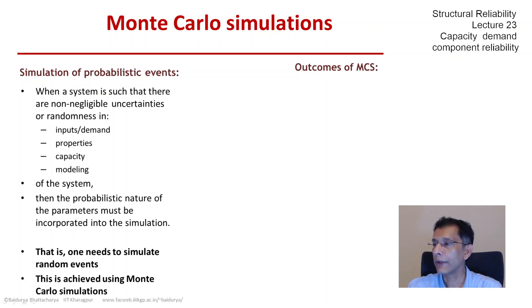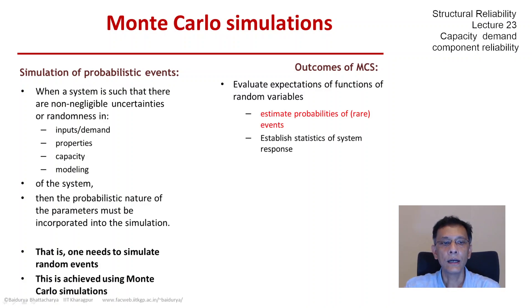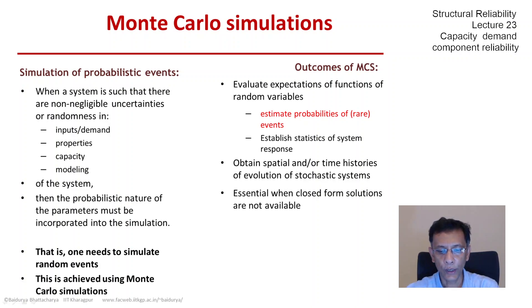The outcomes of MCS are many types. We can evaluate expectations of functions of random variables, which in turn can be used for estimation of probabilities, especially rare probabilities, or establish some system statistics, some response statistics, or we can obtain time histories of a system response. And this is obviously essential when we do not have a closed form solution of the system's behavior.